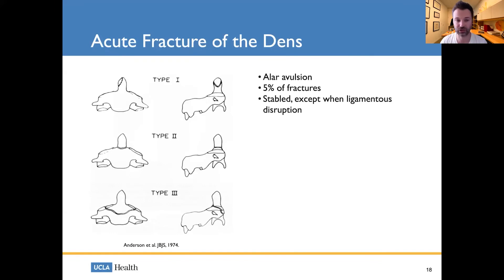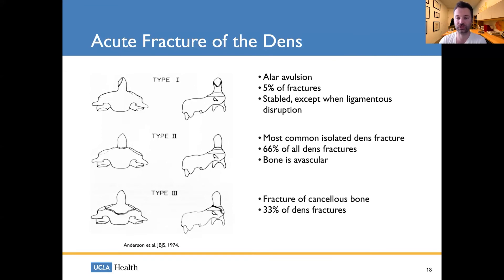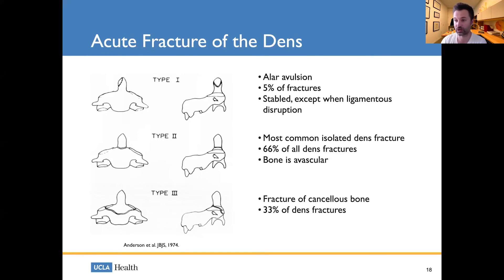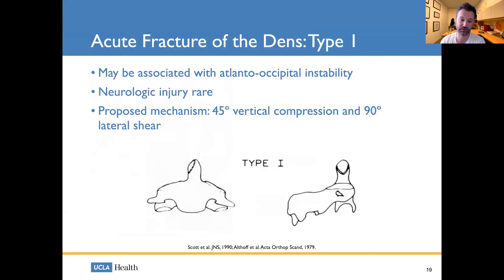Finally, there are dens fractures: Type 1, Type 2, and Type 3. Type 1 is an alar ligament avulsion — usually stable unless there's significant ligamentous disruption. Type 2 is a dens fracture at the base; these don't heal well on their own and not even with hard immobilization such as a halo or even surgery. Both Type 2 and Type 3 represent potentially unstable fractures requiring management, whether halo vest immobilization or internal fixation.